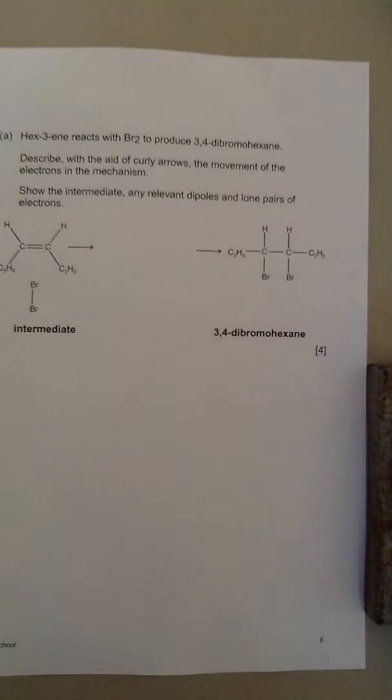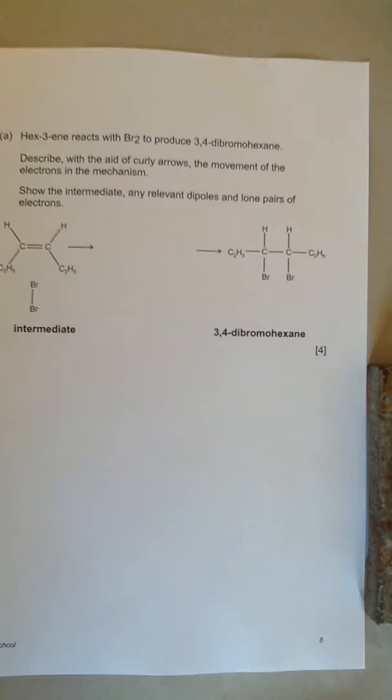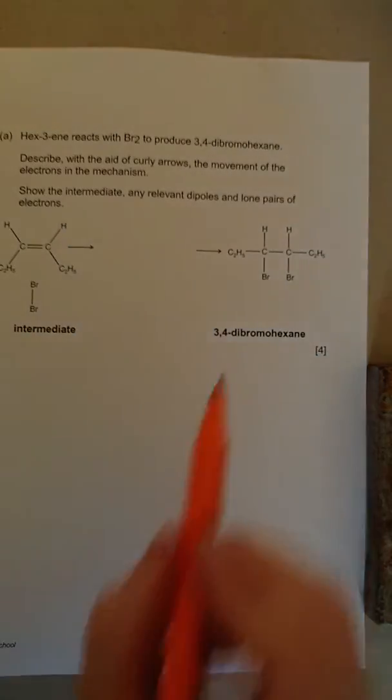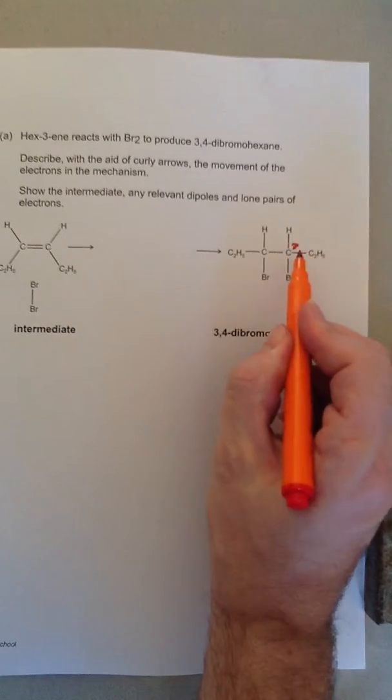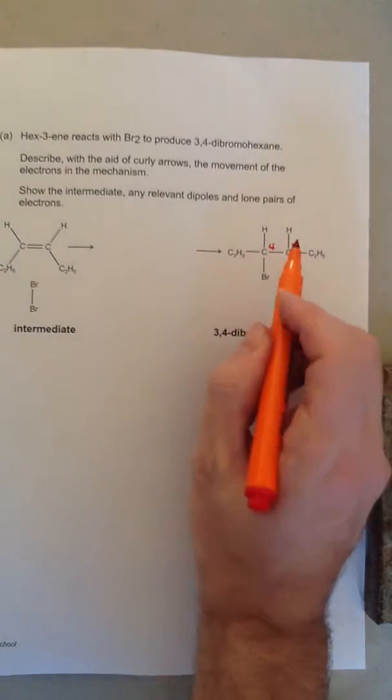Hexene reacts with Br2 to produce 3,4-dibromohexane. Why is it 3,4? Because the bromine atoms are on carbon 3 and carbon 4.